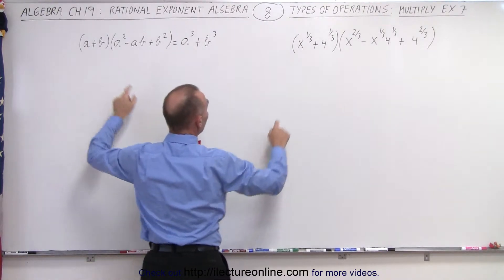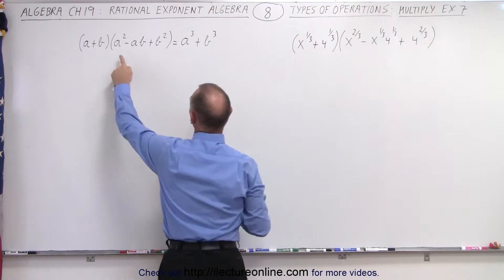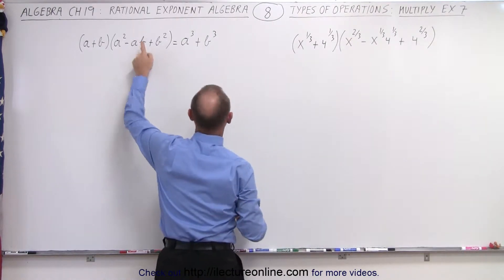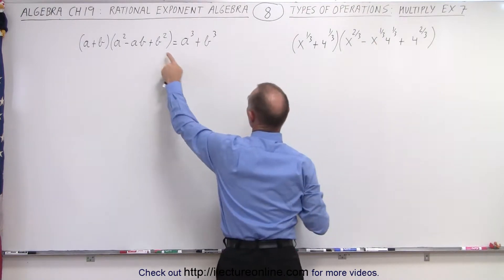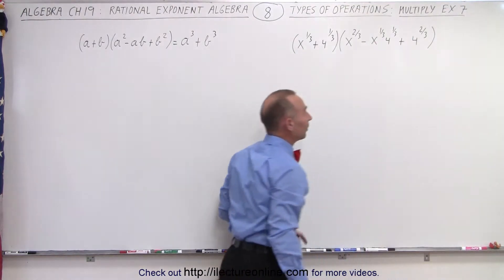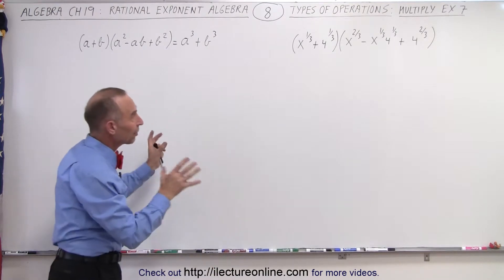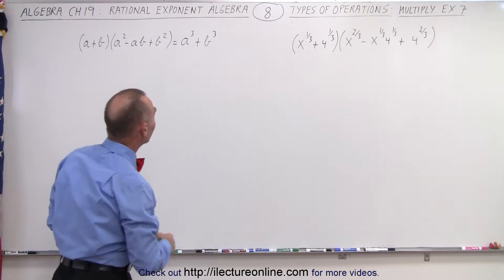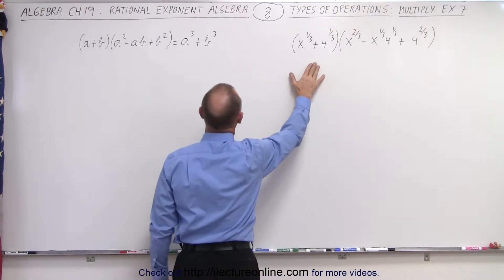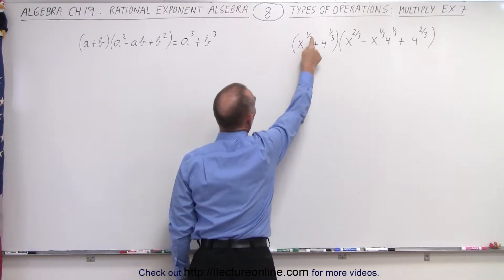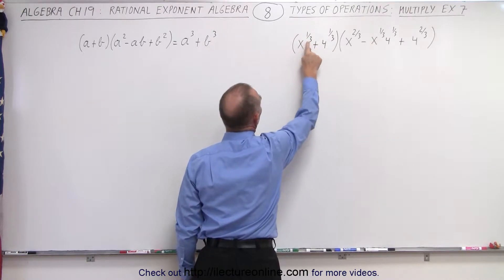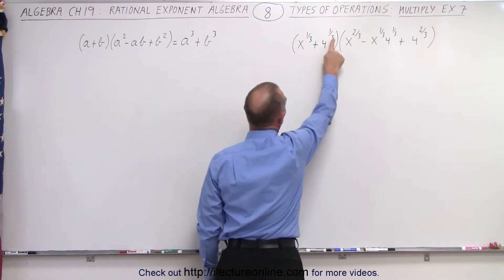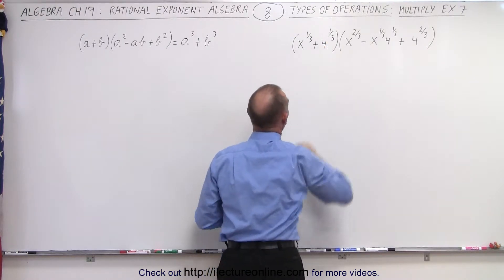Instead of having a to the first power, we have to the one-third power. Instead of the second power, we have to the two-thirds power. Instead of the first power, we have one-third power. Instead of the second power, we have two-thirds power. And notice all the signs are the same. So based upon that comparison, we should be able to say that this looks like it should equal the first term cubed — that would be x to the first power — plus the second term cubed, which would be 4 to the first power.